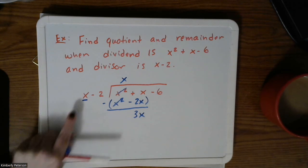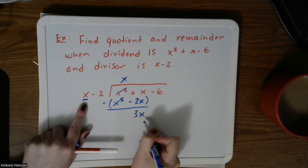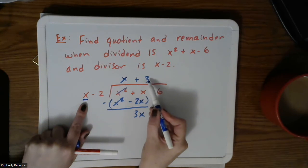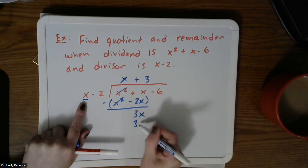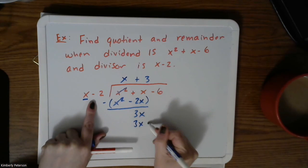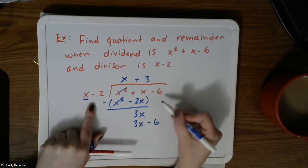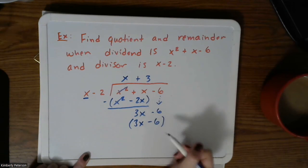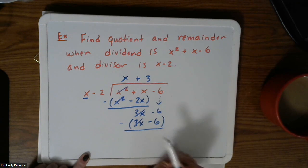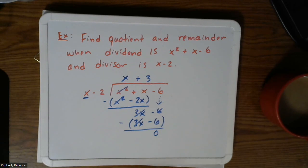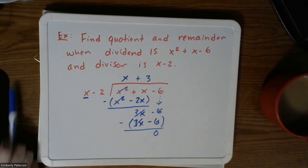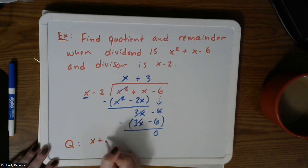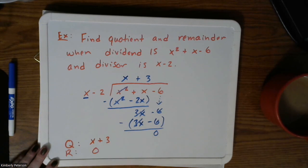The first terms cancel — if they do not, you made a mistake. I have x minus negative 2x to give 3x. Repeating the process: what do I multiply x by to get 3x? Positive 3. Distributing: 3 times x is 3x, and then minus 6. Drop the minus 6 down; those cancel, as do the remaining terms. So the quotient is x plus 3 and the remainder is 0.